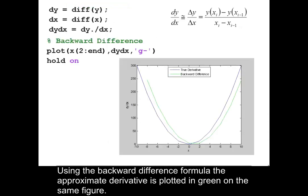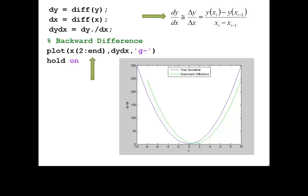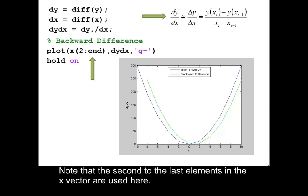Using the backward difference formula, the approximate derivative is plotted in green on the same figure. Note that the second to the last elements in the x vector are used here.